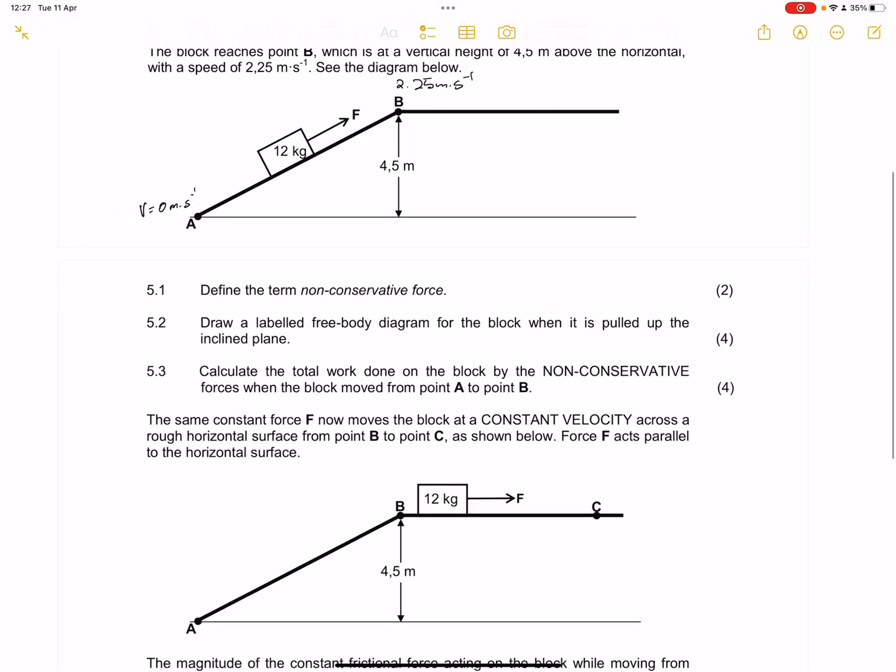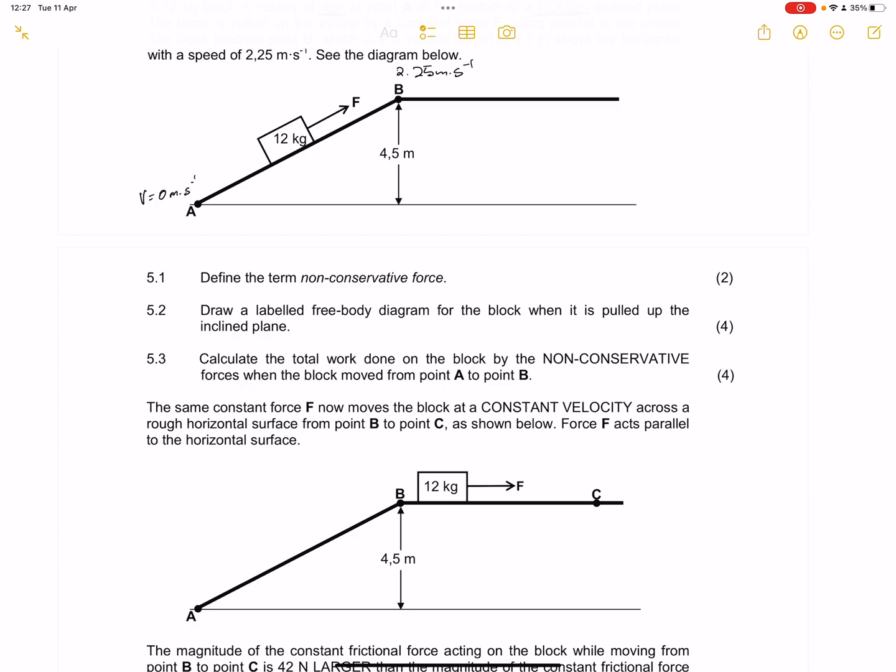Let's get into the first question. They say define the term non-conservative force. Remember that non-conservative forces are forces whose work done depends on the path taken. In this case, an example of that is friction, because friction does depend - when you go to the left, friction goes to the right. When you go to the right, it goes to the left and so on and so forth. So friction does not have a consistent direction.